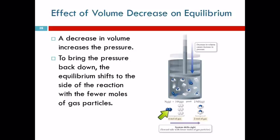By shifting to the product side, we can make fewer particles of gas, and that reduces the pressure, because gas pressure depends on the number of particles, not on what the particles are. That's a hard concept to get your mind around.